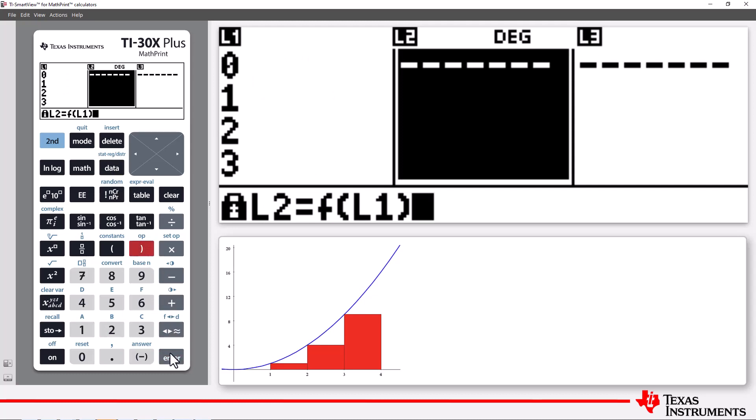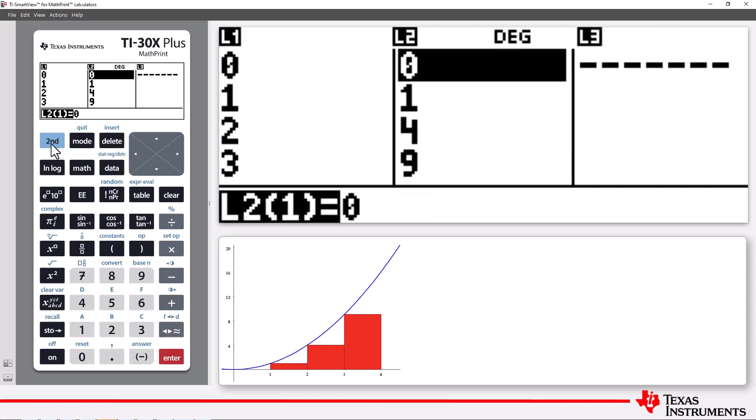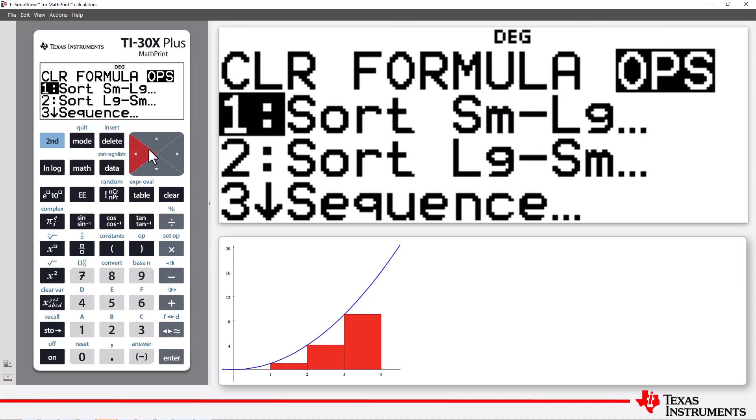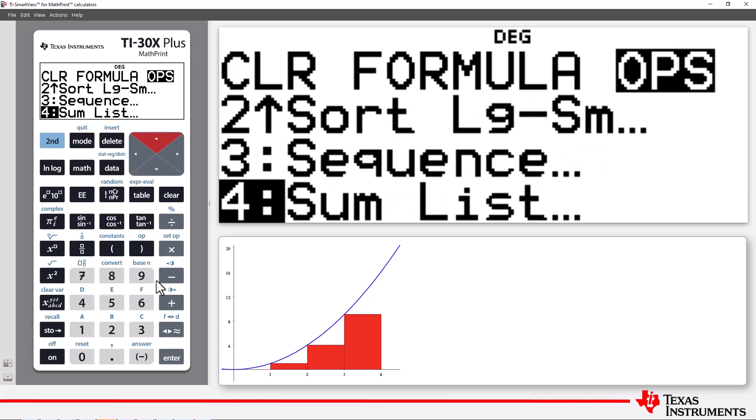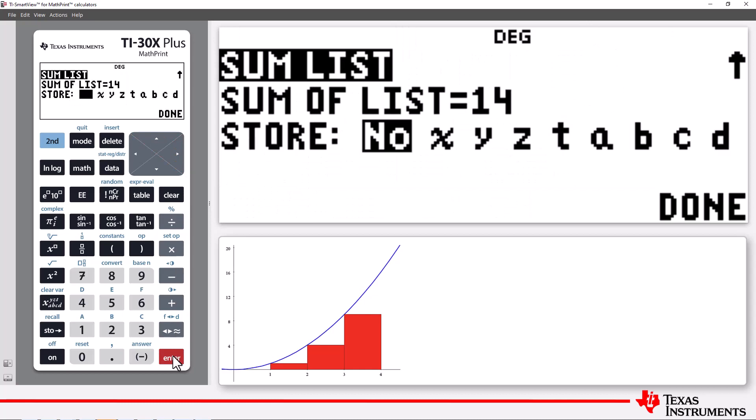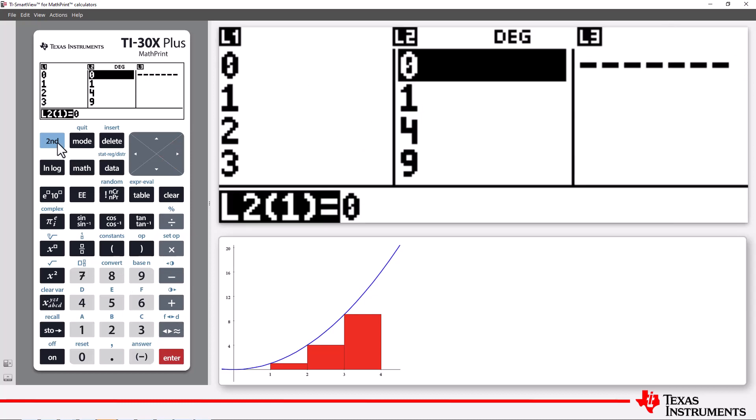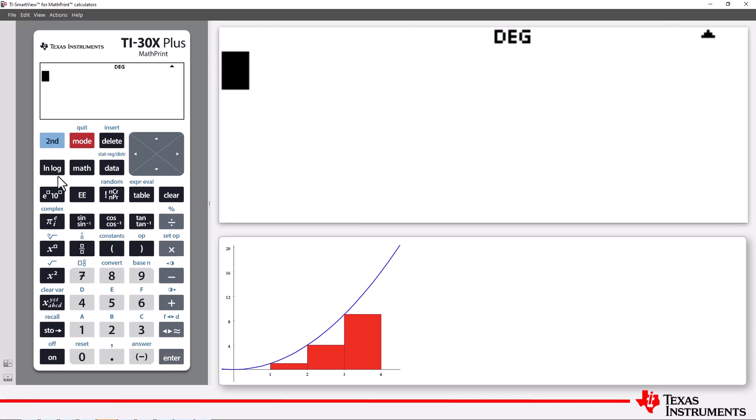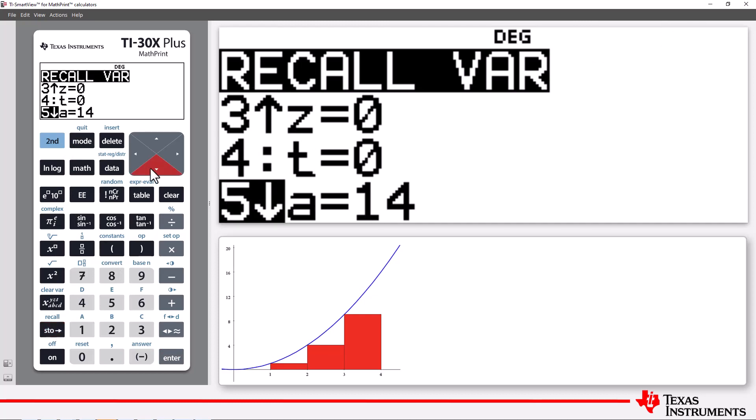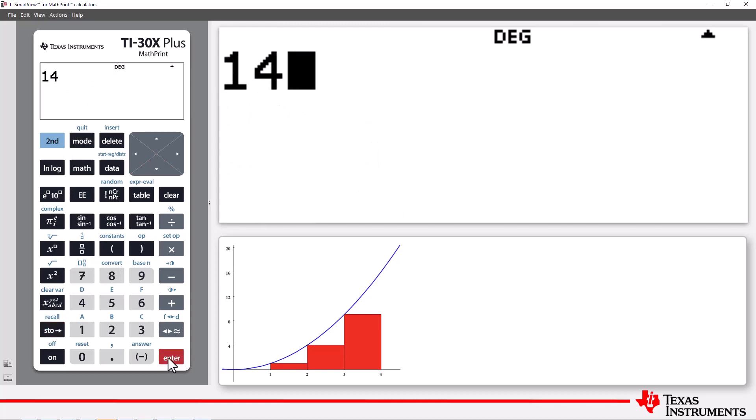Now I need to add these values up. I could add them up manually, but I can use the sum list command and store the results in A. Now I can go back to the home screen, recall A, and there's our first approximation, 14 units.